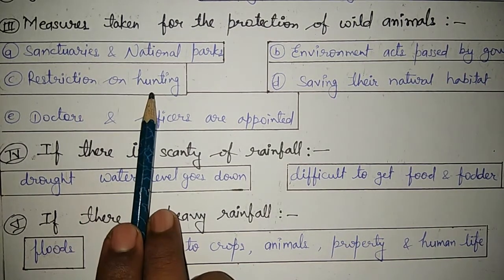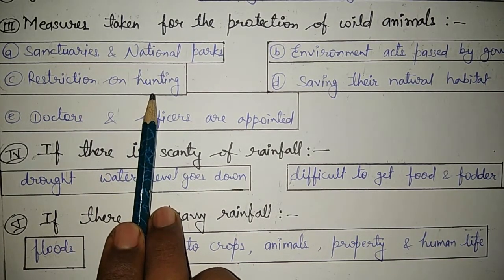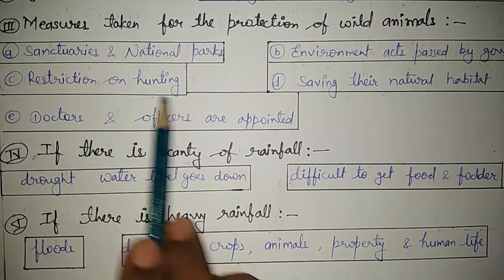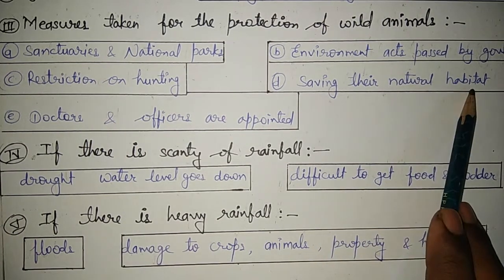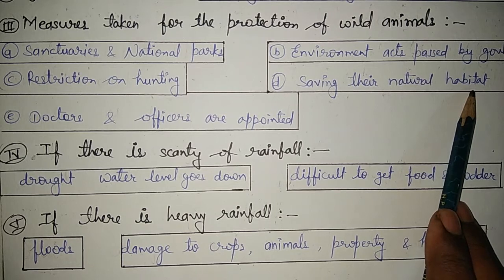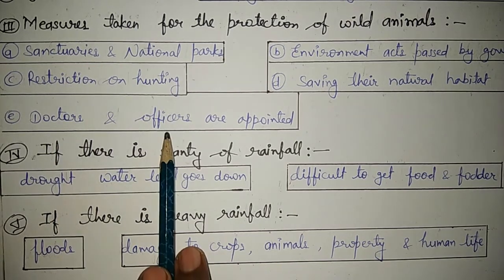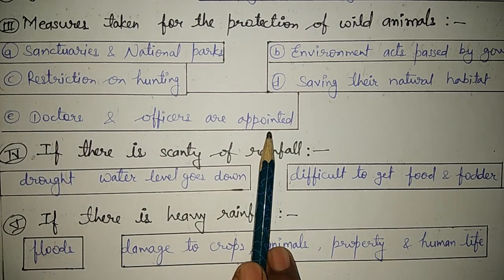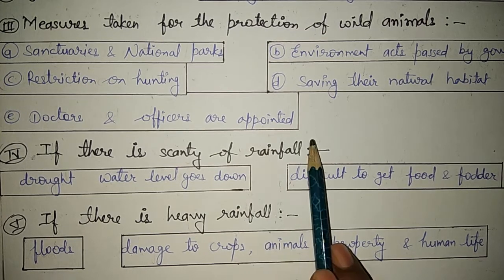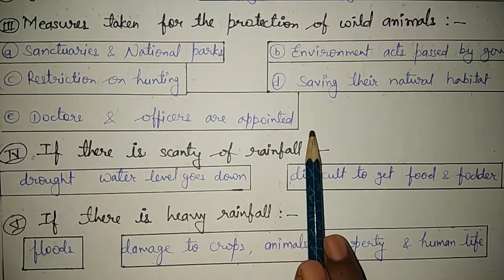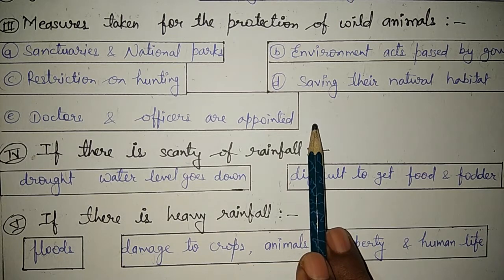Next, environment and biodiversity acts have been passed by the government. There is also a restriction on hunting — no one can kill a wild animal; if they do, they will get punishment from the government. Saving their natural habitat for natural growth is also done by our government. Doctors and officers are also appointed for their development and growth. In this way many measures have been taken for the protection of wild animals.